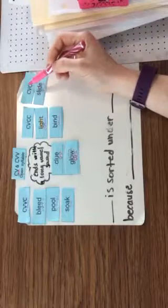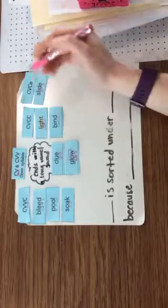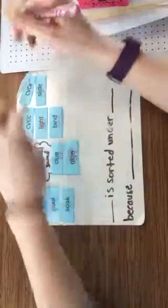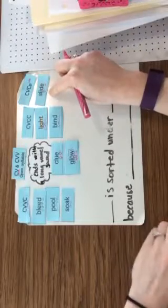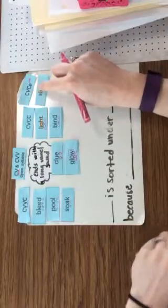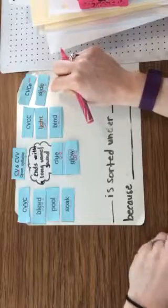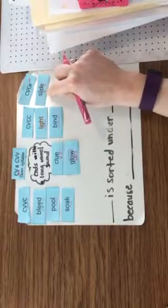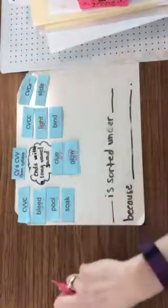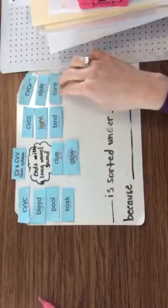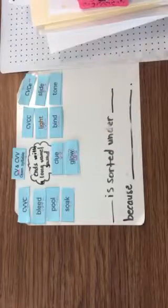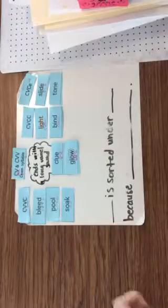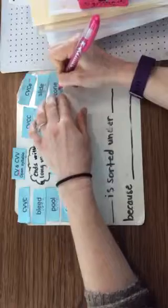The last sort feature is CVCE, which the E on the end is silent. We have the word slide, and slide is sorted under CVCE, because the pattern that makes the I sound is I blank E. We also have the word tone makes the long O sound, and is sorted under CVCE, because the long O sound comes from the O blank E pattern.